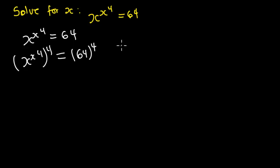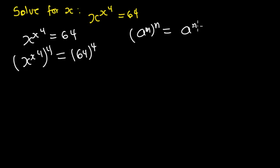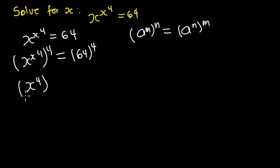From here I'm going to use the interchange rule, such that when we have a exponent m, all exponent n, this is the same as a exponent n, all exponent m. I'm going to apply that to interchange the left-hand side, giving x^4 all exponent x^4.